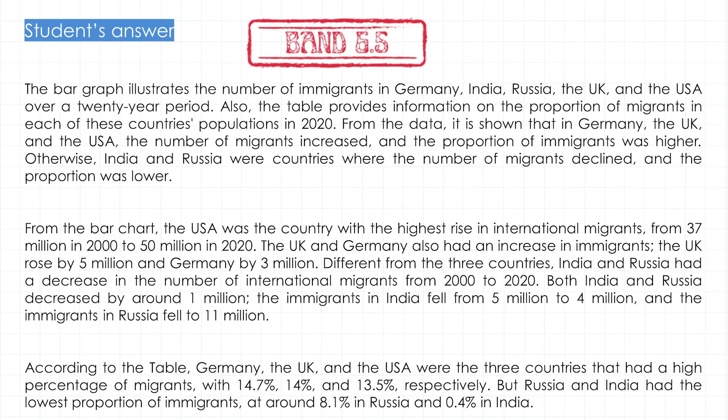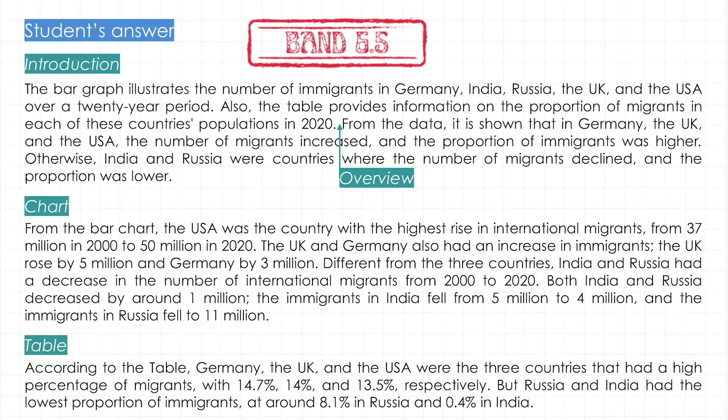Now, the answer. Let's take a good look at our report again. It has three paragraphs. First, the student introduces the task in the first two sentences, and in the same paragraph he gives an overview. Then a paragraph about the bar chart and a paragraph about the table. The structure is logical and it all makes sense. Now let's have a look at each part and see how we could achieve a band 8 score by making as few changes as possible.